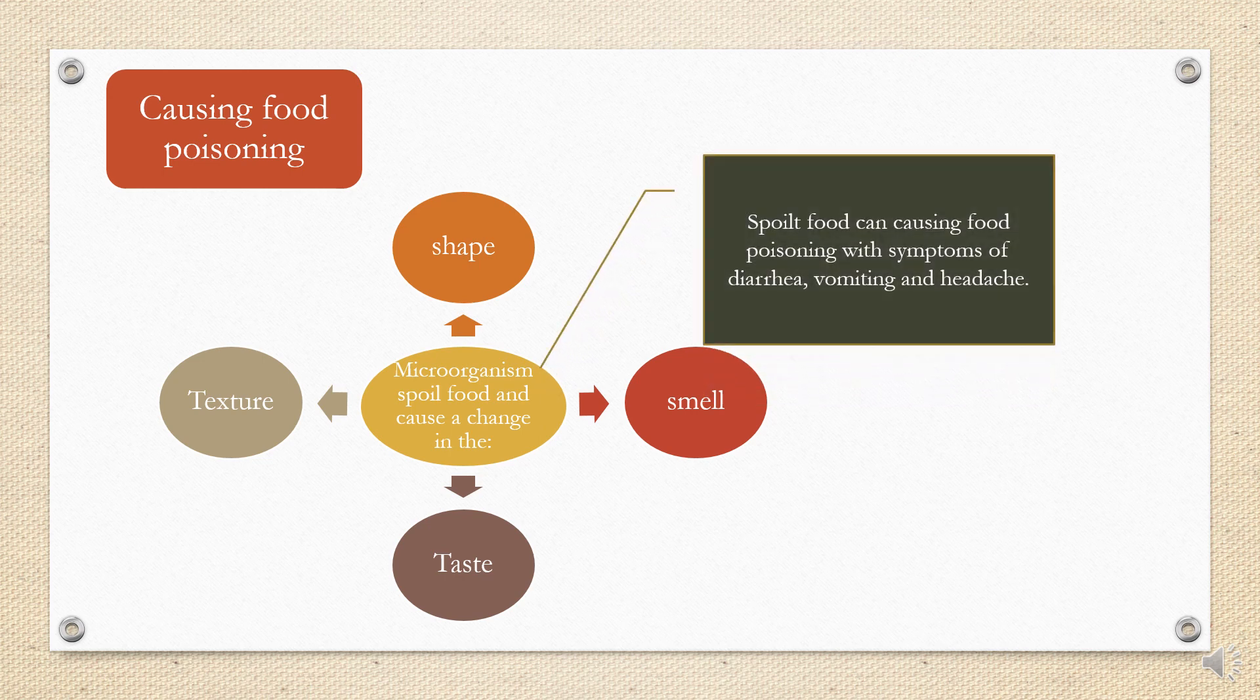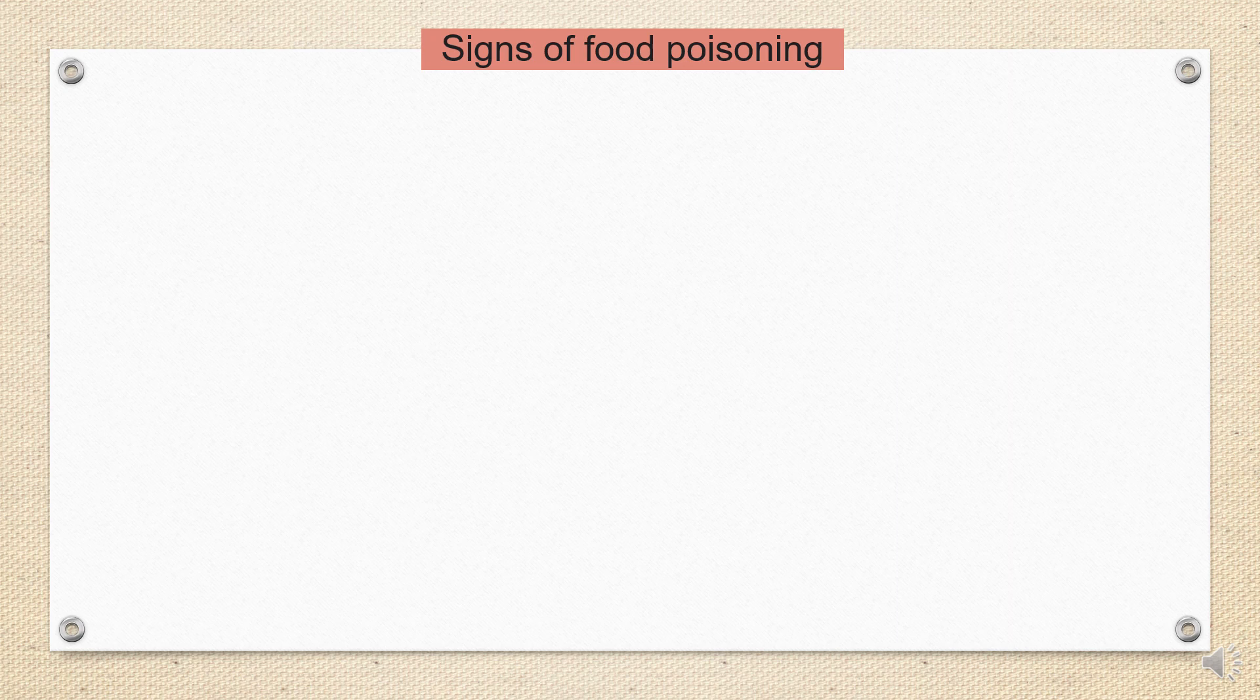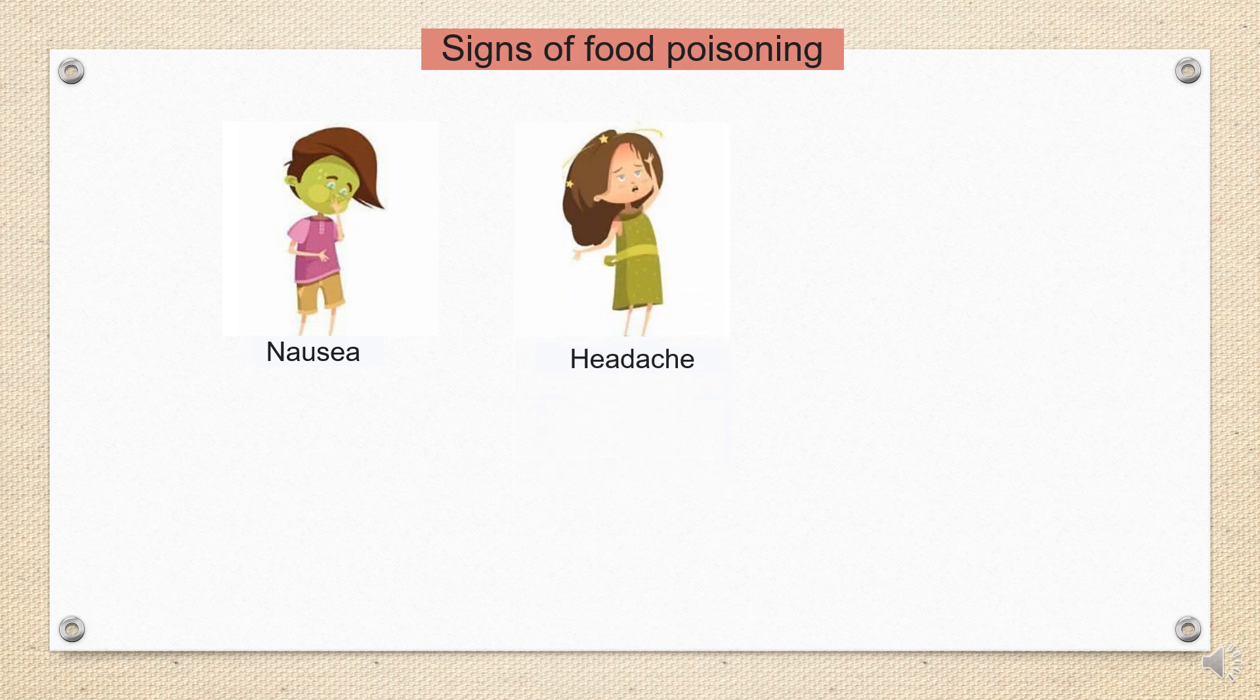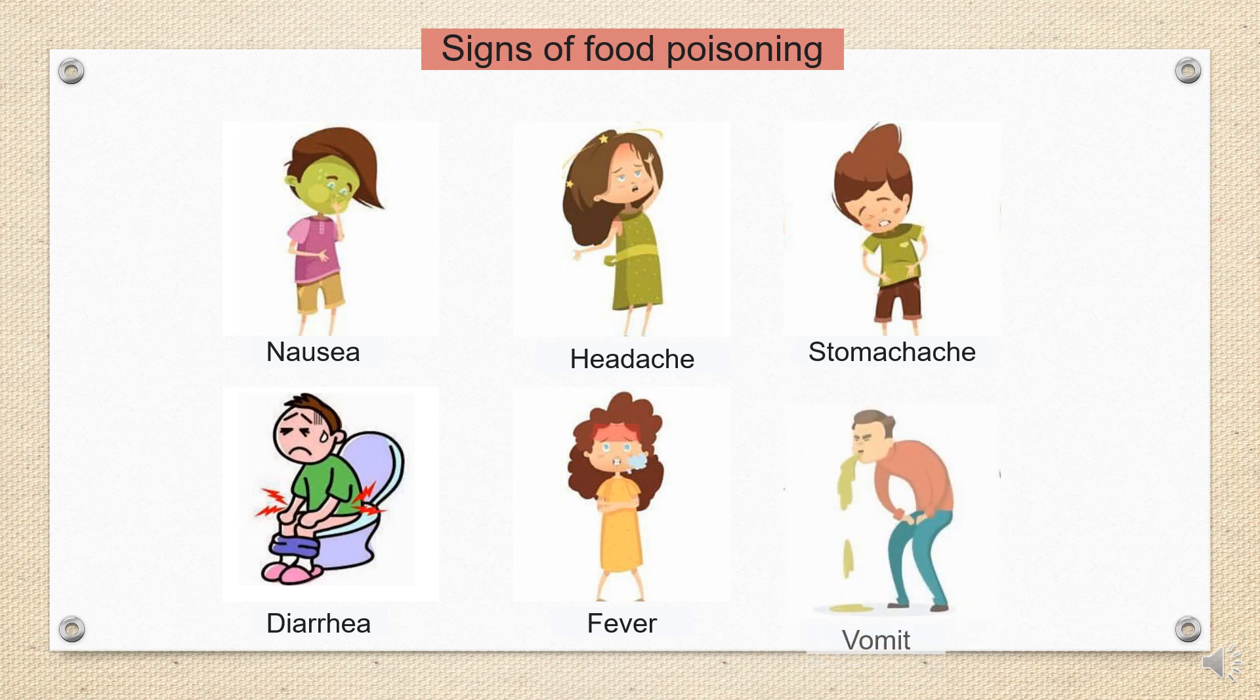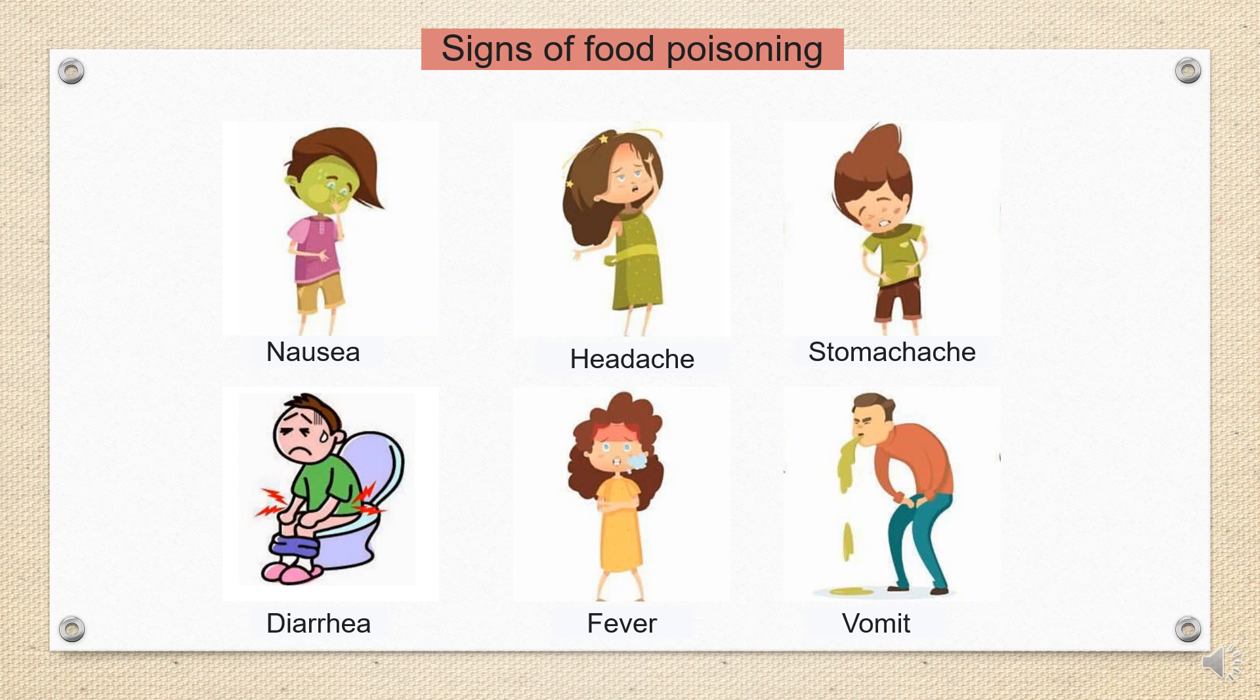Spoiled food can cause food poisoning with symptoms of diarrhea, vomiting, and headache. This is the sign of food poisoning. If you have this kind of sign, there is a possibility that you have food poisoning. For example, nausea, headache, stomach ache, diarrhea, fever, and also vomit. If you have either one of these signs, please go to the doctor, see the doctor and get treatment.